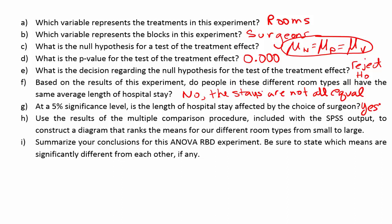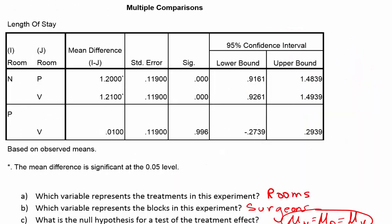Part H asks to use the results of the multiple comparison procedure from the SPSS output to construct a diagram ranking the means for different room types from small to large. We have three means: N (no view), P (pictures), and V (actual view). Starting with the comparison of N and P: the confidence interval is entirely positive, meaning the first mean in the interval was larger than the second mean. So we put a greater-than symbol between N and P.